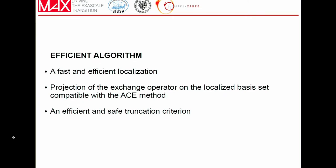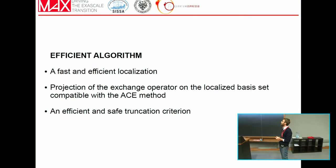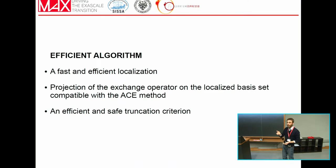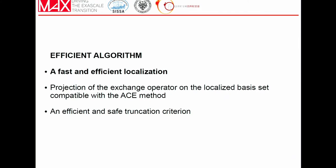Let's see how to transform this proof of concept, this general idea, into a practical algorithm which can be used in the SCF. The main ingredients are: we need a fast and efficient localization procedure. We want to do it inside the SCF, so the orbitals need to be localized many times at every SCF iteration — we need a fast algorithm that can scale to large systems. Then, assuming we have a localized representation of the orbitals, we have to project the exchange operator onto the localized representation. And finally, once we have the exchange potential expressed in terms of localized orbitals, we need a fast and efficient criterion for truncating the orbital interactions.